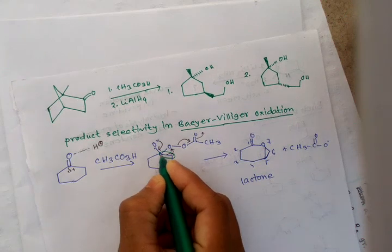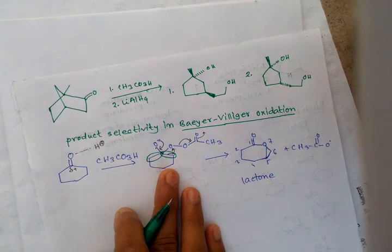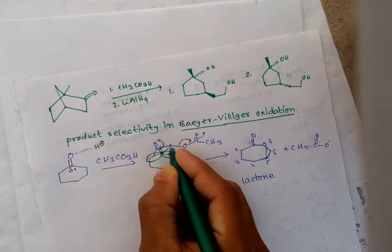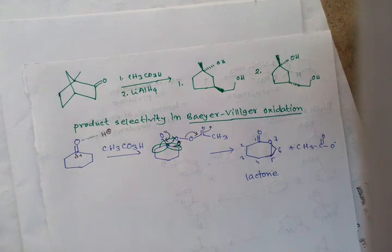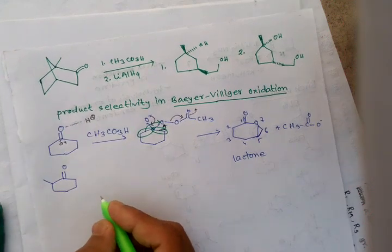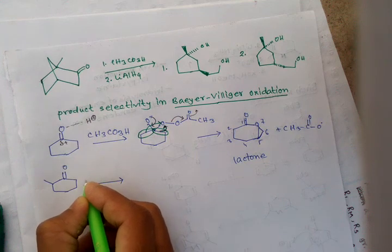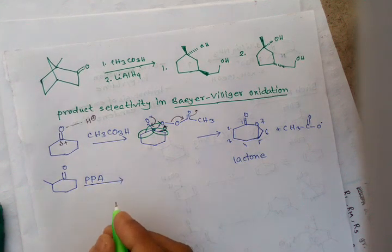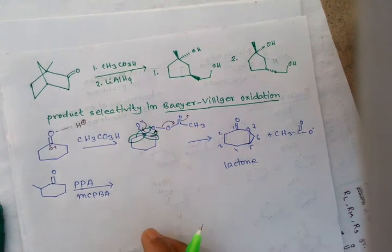Here, this carbon and this carbon are identical in nature, so there is no question of which group will migrate — this one or this one — because both are the same. If they are different, consider for example a molecule like this one with a methyl group, and we add peracetic acid.